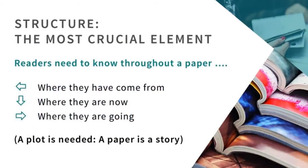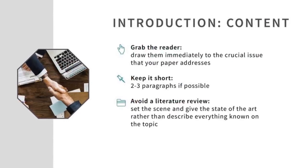Now, as we jump into the remaining section of academic article structure: remember that the first section of academic paper writing is the title and the abstract, which we've just covered. Readers need to know throughout the article where they've come from, where they are now, and where they're going — just like watching a movie or reading a detective story. You need a plot. A paper is a story and you have to keep people interested.